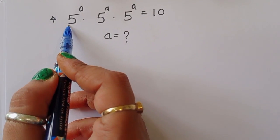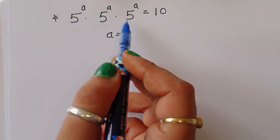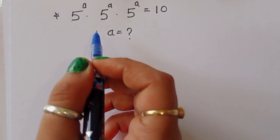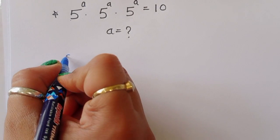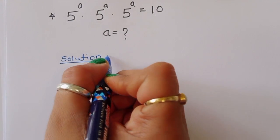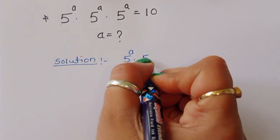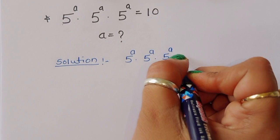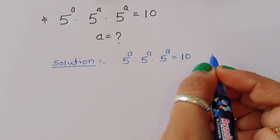The question is: given 5^a times 5^a times 5^a is equal to 10, we have to find out the value of a. Let's see the solution — how we can find out the value of a.